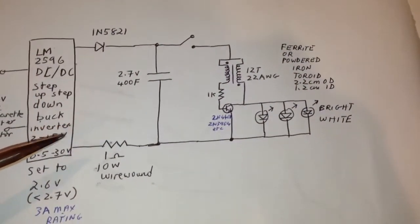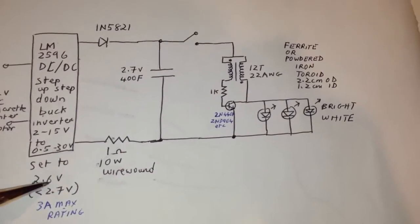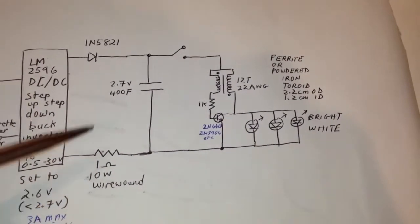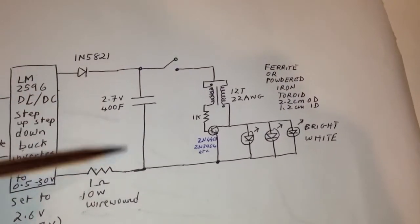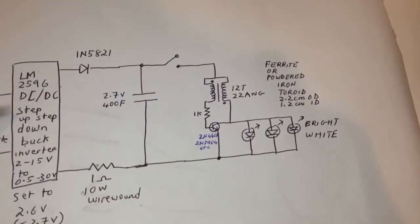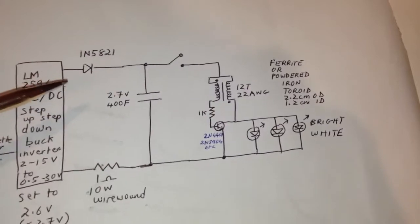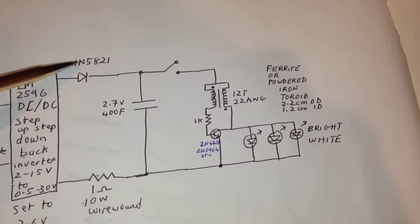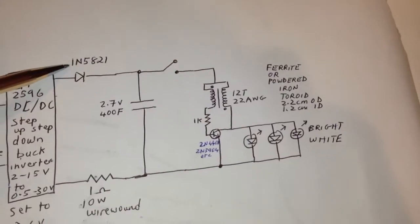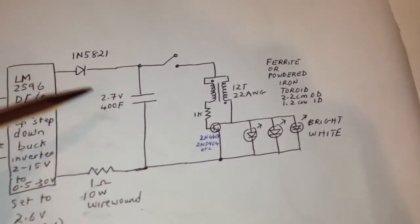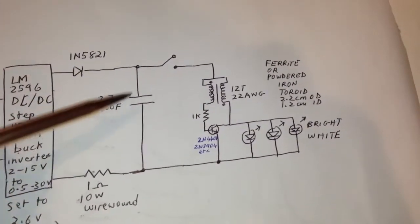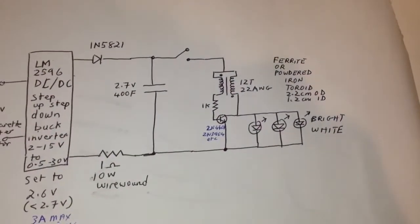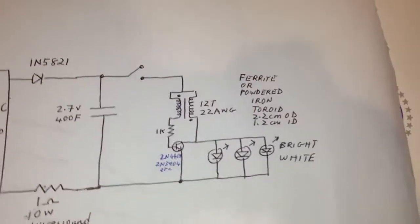So in order to not exceed this rating, I put a 1 ohm 10 watt wire round resistor to prevent blowing this inverter. There's a resistor, there's a diode here. This is a 1N5821 prevents back discharge of the charged ultracapacitor through the inverter when the circuit is not powered.